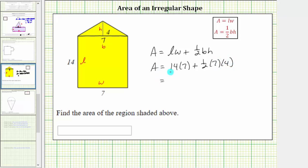And now simplifying, 14 times 7 equals 98, plus, well 7 times 4 is equal to 28. One-half times 28 is equal to 14.